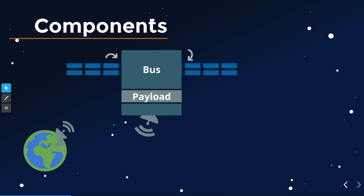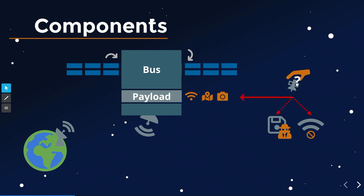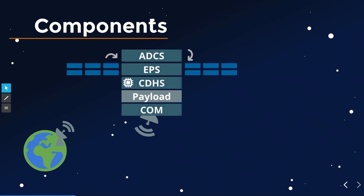Generally, satellites are composed of two big parts: a bus system and a payload system. The payload is whatever equipment the satellite carries for its service — a camera for Earth observation, radio frequency equipment for telecommunications. The bus system keeps the satellite alive in space. Malicious data interactions happen at the payload level, but for full seizure of control, we have to look at the bus system. Space people really like their acronyms.